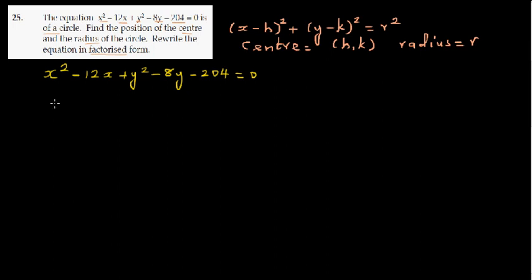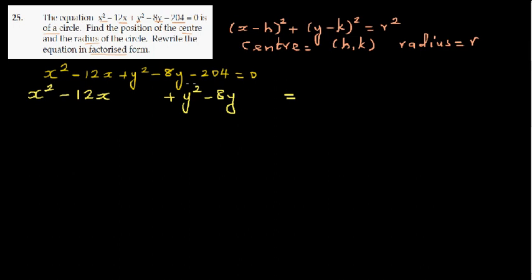We're going to use the completing the square method. I'll write it as: x squared minus 12x, leaving a gap, plus y squared minus 8y, leaving another gap. Then I'll move 204 to the other side by adding 204 to both sides.